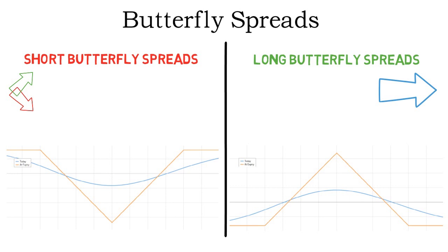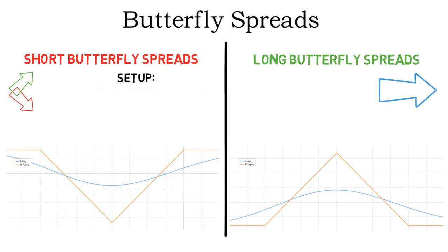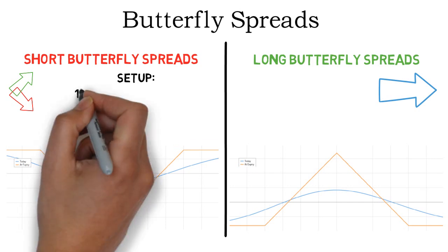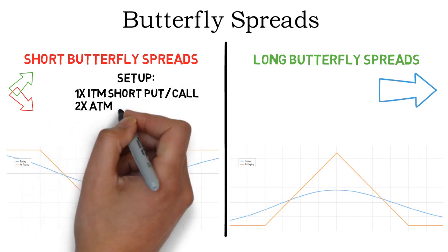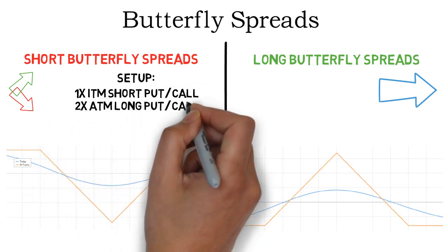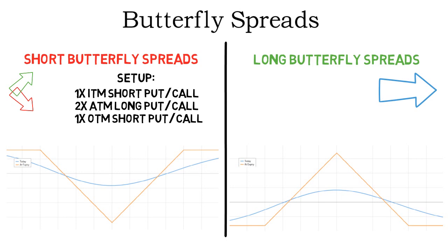The setup of butterfly spreads is relatively simple. There are two different butterfly variations for both short and long butterfly spreads — both put and call butterfly spreads. There are only very few minor differences between these. All options are puts for put butterflies and all options are calls for call butterflies. To setup a short put butterfly you will need to sell one in the money put, buy two at the money puts and sell one out of the money put. If you exchange all the puts with calls, you will have a short call butterfly.